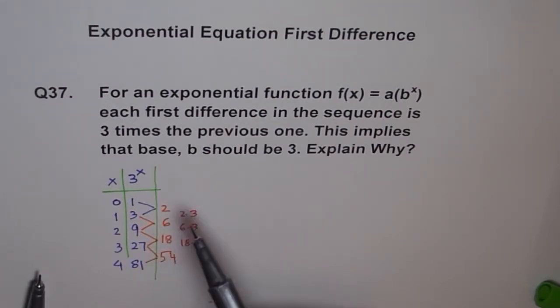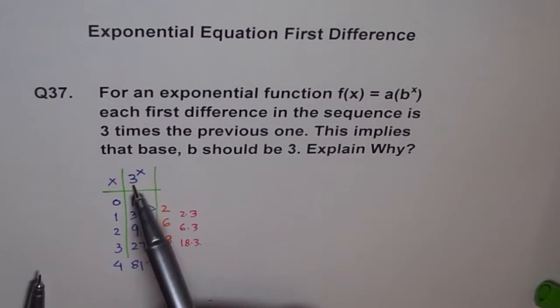So each term in this sequence is 3 times the previous one. And what did we take? We took just b as 3. A we took just 1 and b as 3, and that is what we found. And that is so typical about exponential functions. Now we need to explain it. With this example, it is a good enough explanation. But in general, how can we explain it?